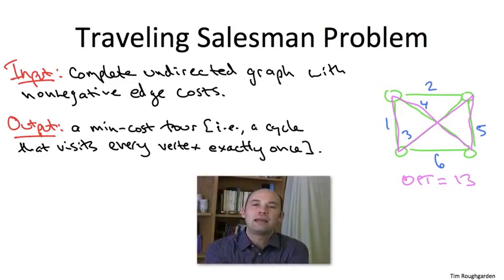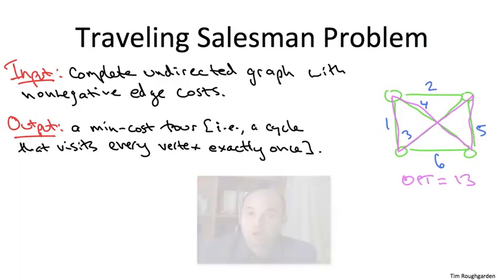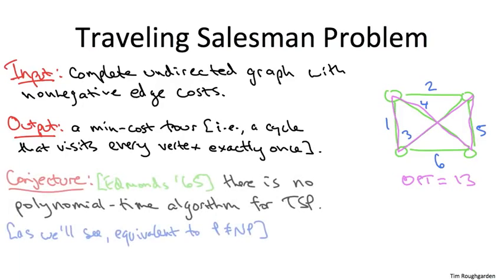In fact, way back in 1965, Jack Edmonds, in a remarkable paper called Paths, Trees, and Flowers, conjectured that no polynomial time algorithm exists for the traveling salesman problem. This conjecture remains unresolved to this day, almost 50 years later. As we'll see, this is equivalent to the conjecture that P is not equal to NP. So how would you formalize a proof of this conjecture? How would you amass evidence that this conjecture holds in the absence of a proof? Those are the topics of the upcoming videos.